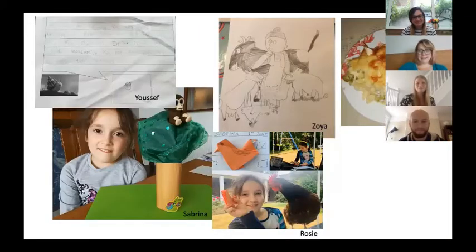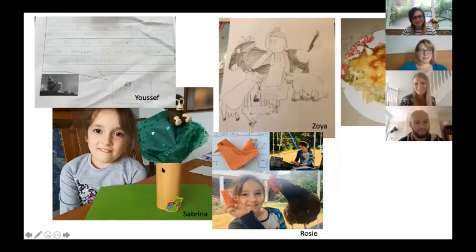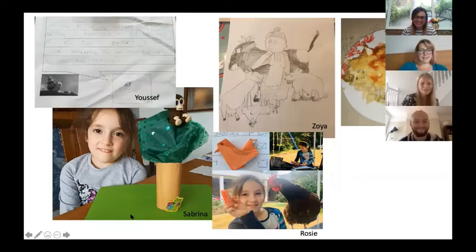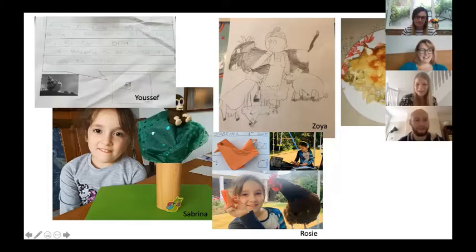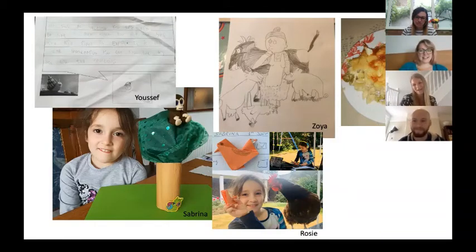And then we've got some more work here from this half term. So this is Sabrina. And she has made her tree here out of some of the materials in her house. So I think she has used a toilet roll. Yeah. She decided to use some lovely green fabric that she had to make all the leaves on her tree as well. And here she is as well with her hen origami from Monday. And this is Rosie here, who was watching her make her hen origami when she was making it in her garden. So that's Rosie.